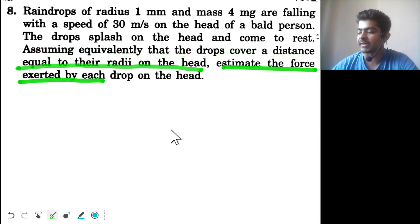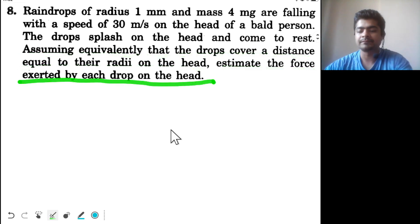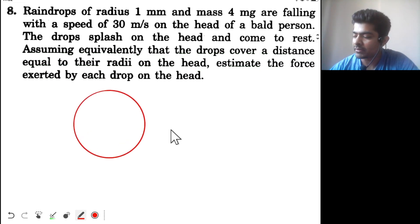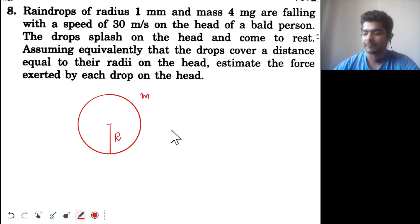So let's try to understand what exactly is happening. Let's take a single drop. We'll put the values later on. The drop has mass m and its radius is r. The drop reaches the surface of the bald person. This is the head of the bald person.